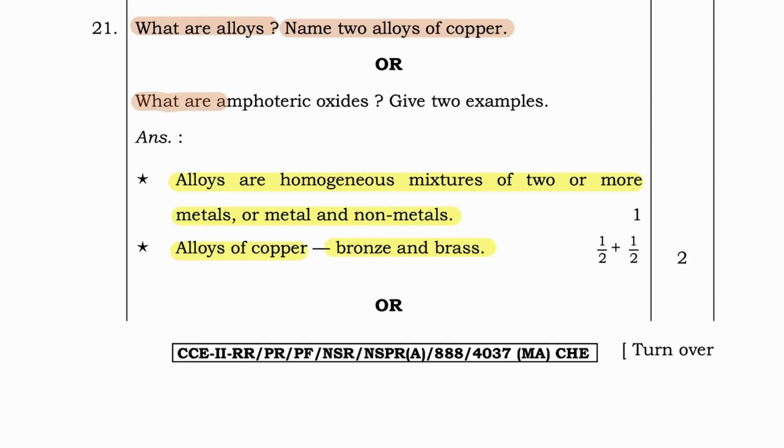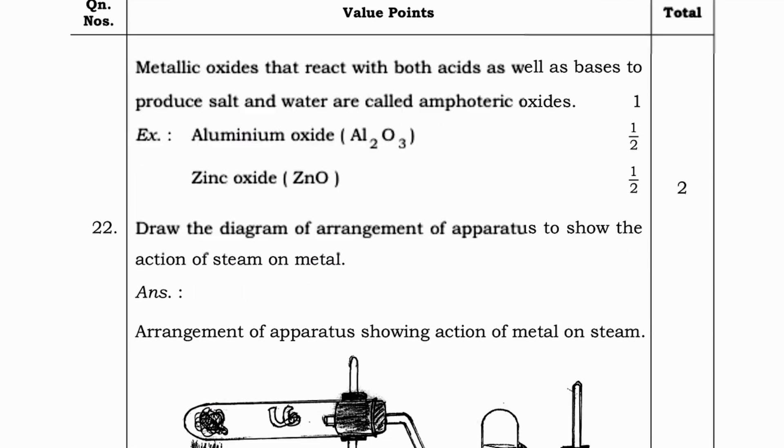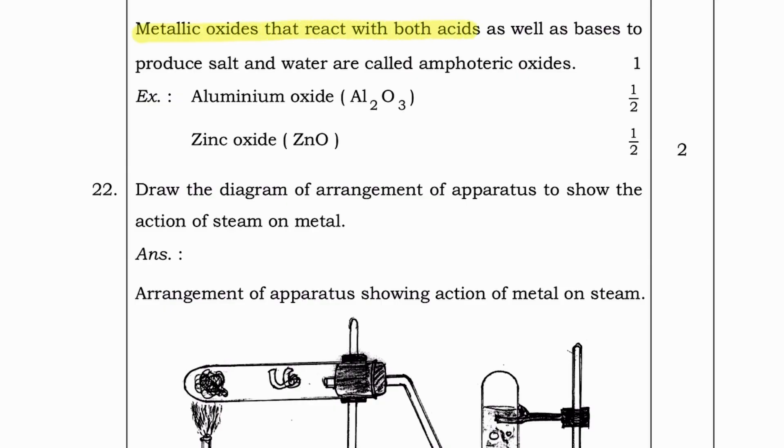Optional question is, what is amphoteric oxides? Give two examples. Metallic oxides that reacts with both acids as well as bases to produce salt and water are called amphoteric oxides. Aluminium oxide Al2O3 and zinc oxide ZnO are examples.